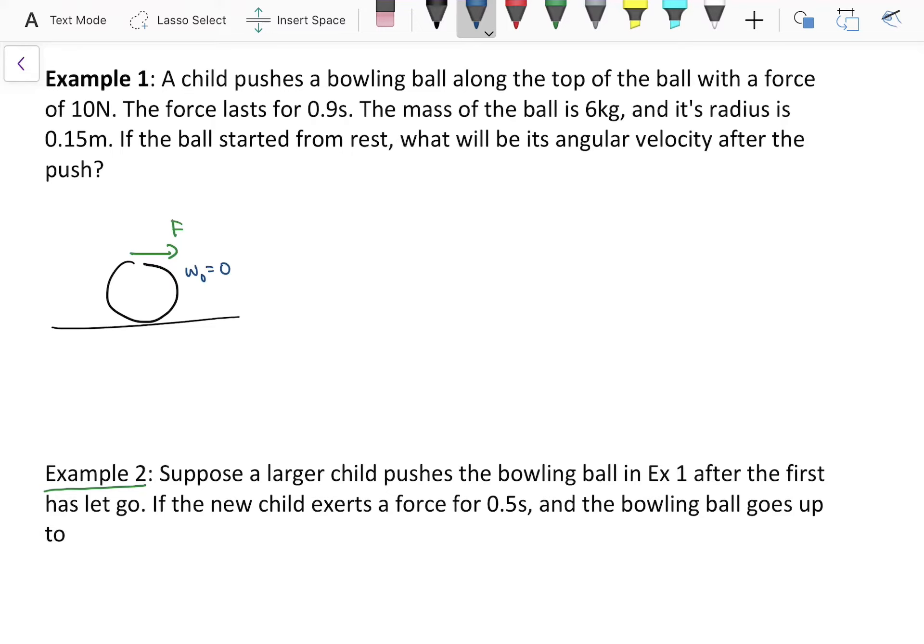So, we want to, for example 1, figure out what the new omega is going to be. Well, that means if we're going to use the equation sigma tau times delta T is equal to I times delta omega, we need to figure out what the new omega is, which means we have to know the I, and we have to know the torque. So, take a second, you can pause the video here.